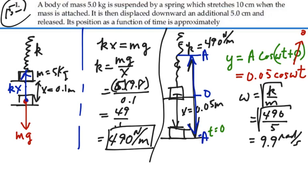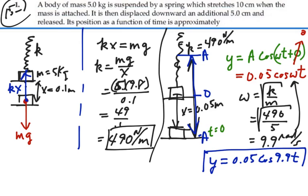So now we can plug that in for omega. So our equation for this motion is going to be y equals 0.05 meters cosine 9.9t with no phase angle. That is our equation of motion for all time.